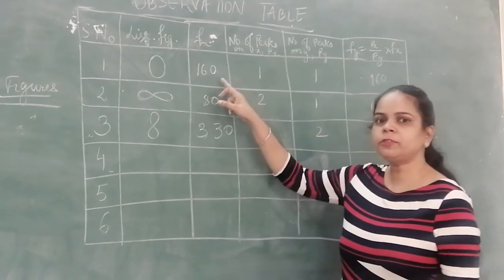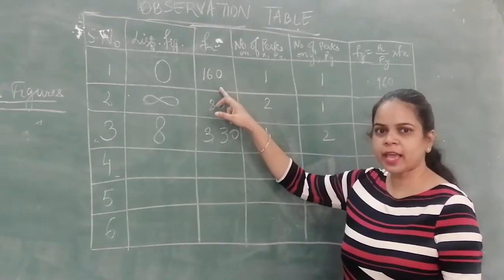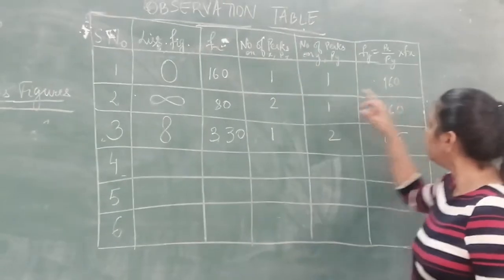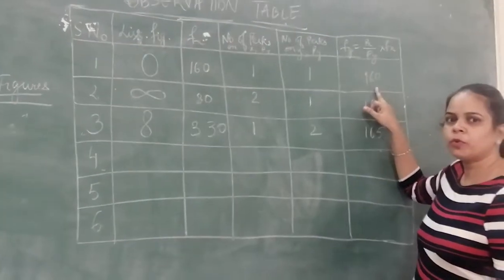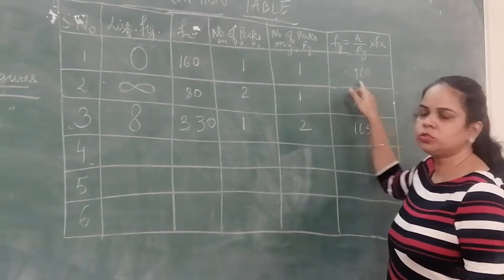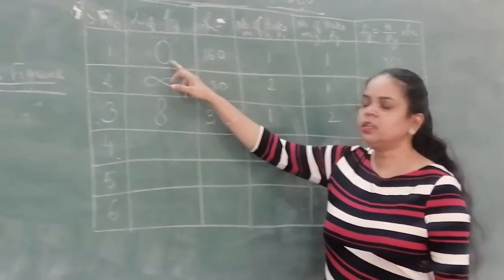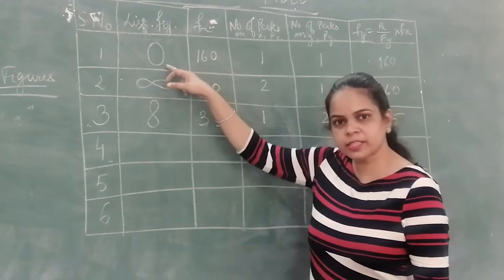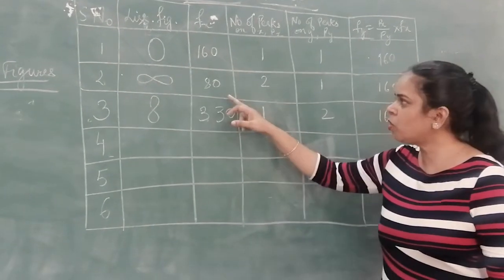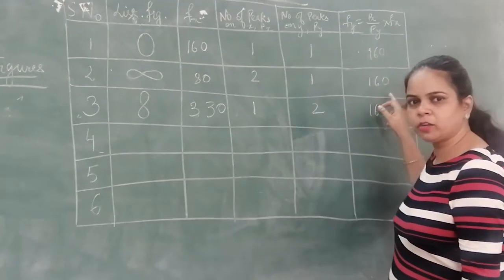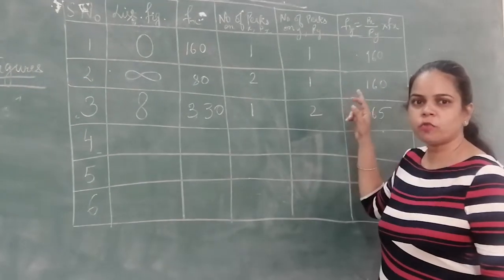What happens if the frequency of the x-component and the frequency of the y-component are both equal? Suppose this is 160 hertz and this is also 160 hertz. Then we get a spherical or elliptical Lissajous figure.